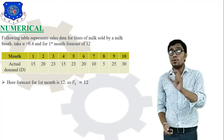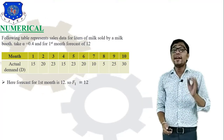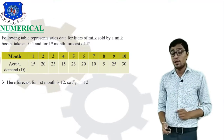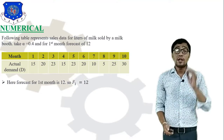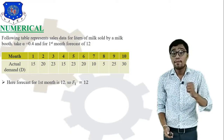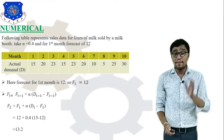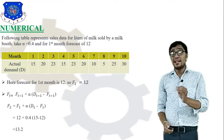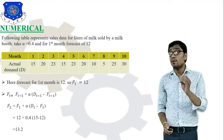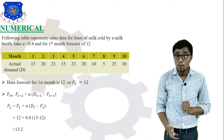The equation to use is: F(t) = F(t-1) + α × [D(t-1) − F(t-1)].